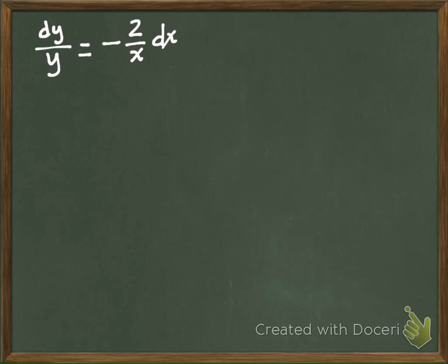So this gives me dy over y. And this gives me negative 2 over x dx. You just want the x's on one side and the y's on the other. Whose question was that? Okay. Does that make sense, Amy? Yes ma'am. Okay.